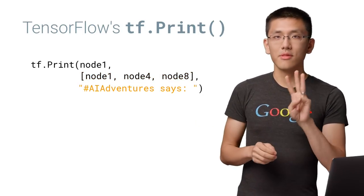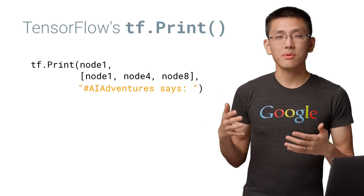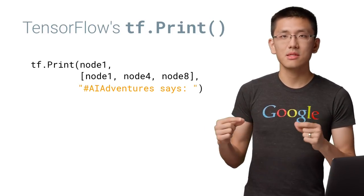There is also a third argument, a message. This will allow you to prepend some string before printing out those nodes so you can easily find a given print statement in your logs.